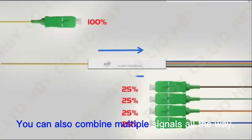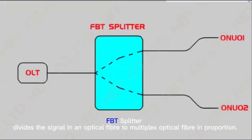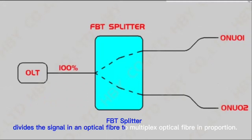You can also combine multiple signals into one. FBT splitters divide the signal in one optical fiber to multiple optical fibers in proportion.